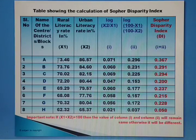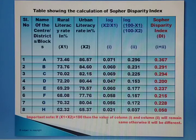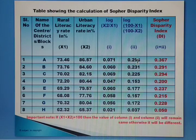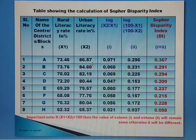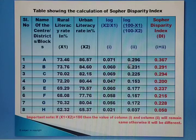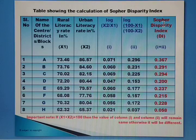One important note: if the sum of x1 and x2 equals 100, then Column 1 and Column 2 values will be the same. If x1 and x2 sum to more than or less than 100, then Column 1 and Column 2 values will be different.